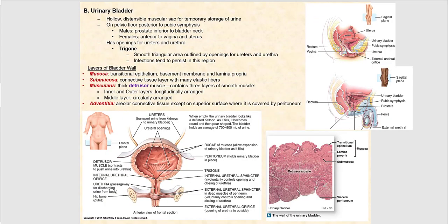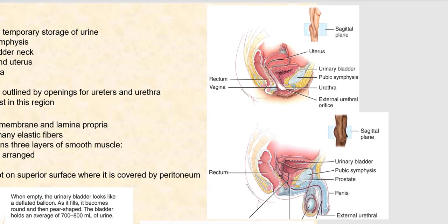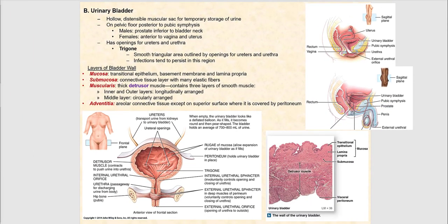The next organ is the urinary bladder — a hollow, distensible, muscular sac for the temporary storage of urine. It lies on the pelvic floor just posterior to the pubic symphysis. In males, the prostate gland lies inferior to the neck of the bladder.